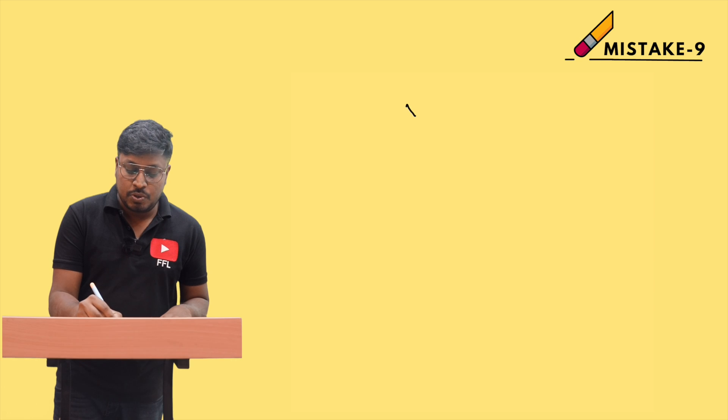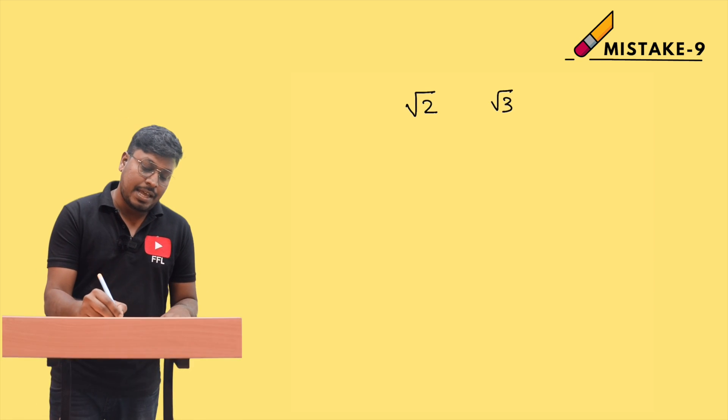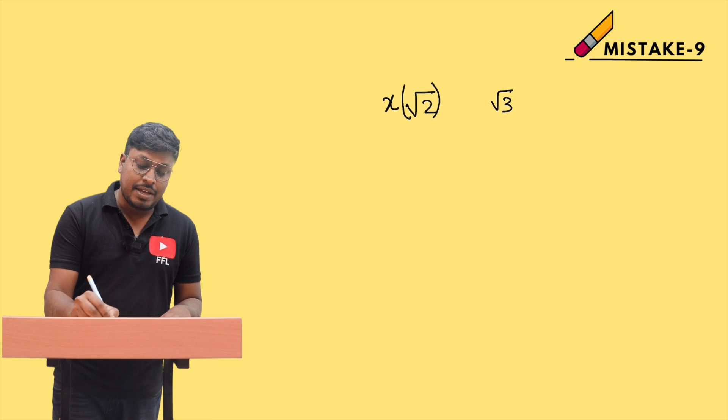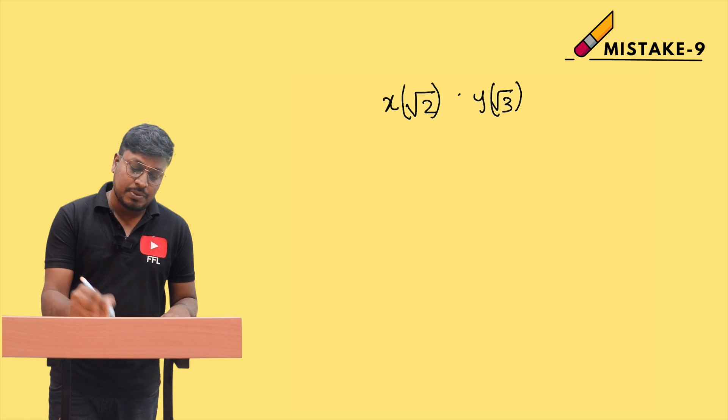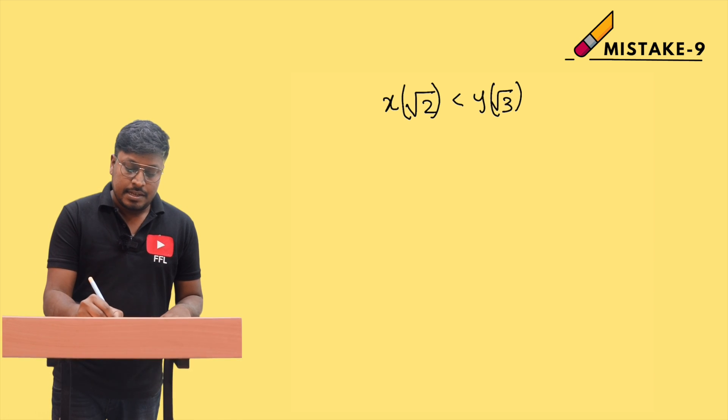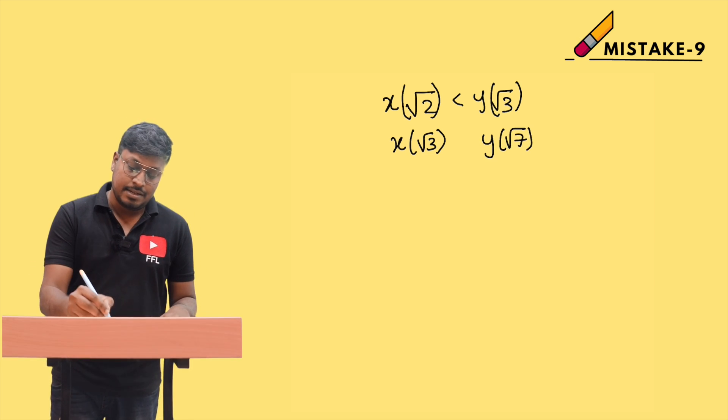See here: if the value is √2 and √3, while comparing, assume x value is √2, y value is √3. Which is greater? We can say √3 is greater. If x value is √3 and y value is √7, then √7 is greater.